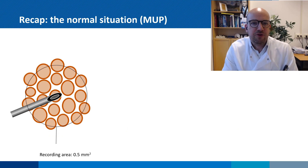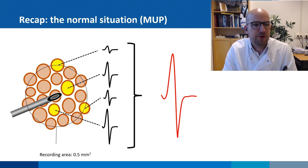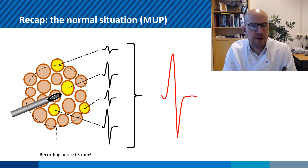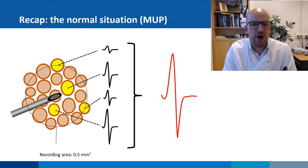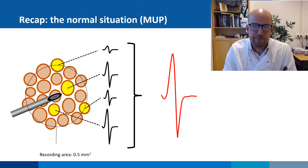What we measure when we stick a recording needle in the muscle is the electrical activity of motor units. The concentric needle electrode has a recording surface of about half a millimeter. This means that only a handful of all fibers belonging to a motor unit will contribute to the motor unit potential. Fibers closer to the needle will have a larger contribution than fibers further away.